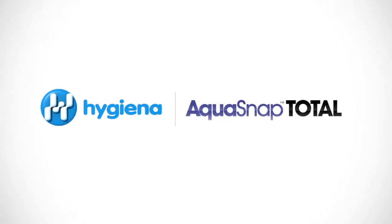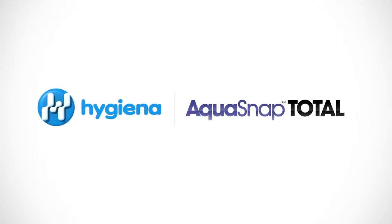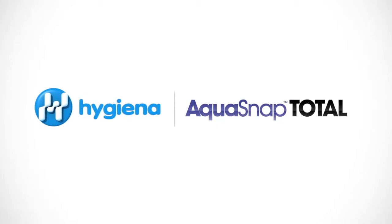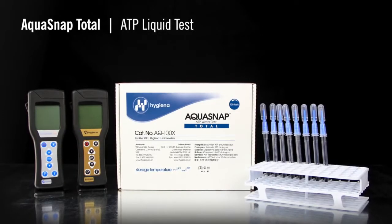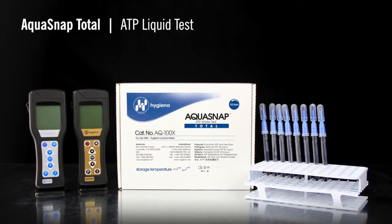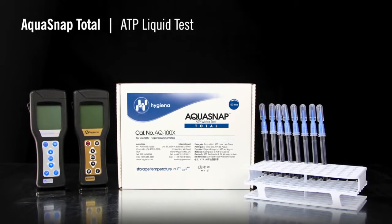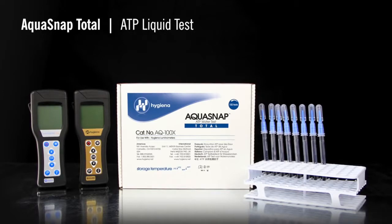This instructional video will demonstrate the proper use of Aquasnap, Hygiena's ATP test for water samples. Aquasnap detects both organic and microbial contamination. It is often used as a tool for the management of water systems, such as cooling towers or clean-in-place systems.